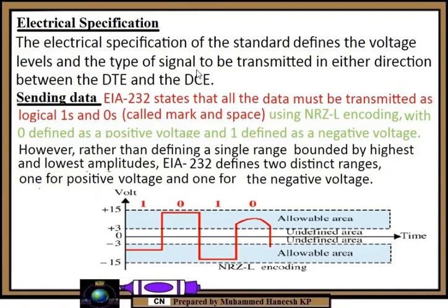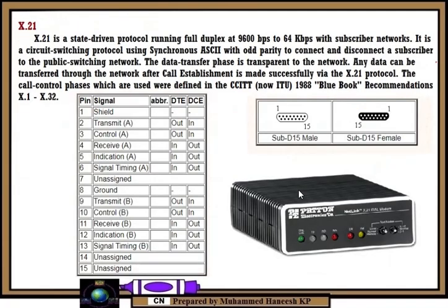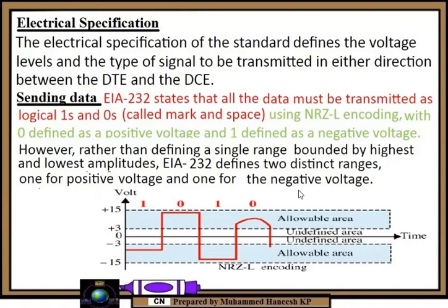The electrical specification of EIA-232 defines the voltage levels and the type of signal to be transmitted in either direction between the DTE and DCE interface. EIA-232 states that all data must be transmitted as logical ones and zeros — called mark and space — using NRZ-L encoding, with zero defined as a positive voltage and one defined as a negative voltage. Rather than defining a single range bounded by highest and lowest amplitudes, EIA-232 defines two distinct ranges: one for positive voltage and one for negative voltage.